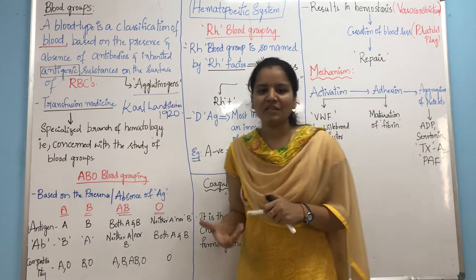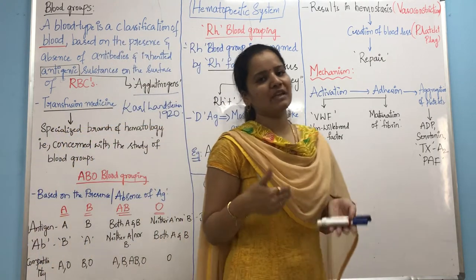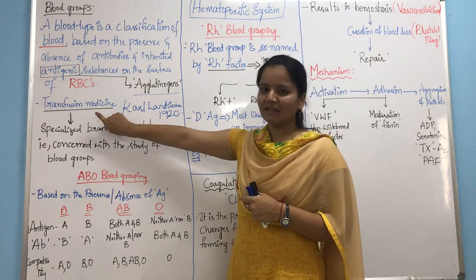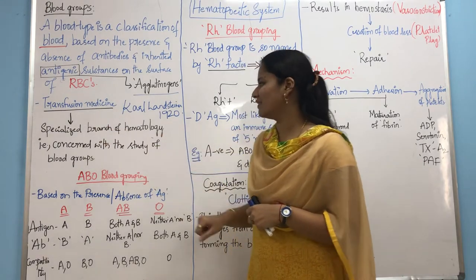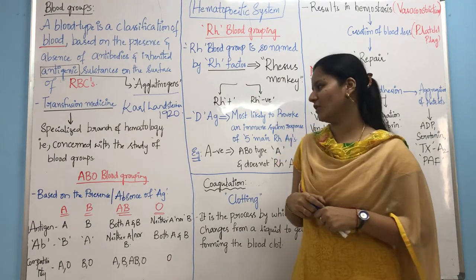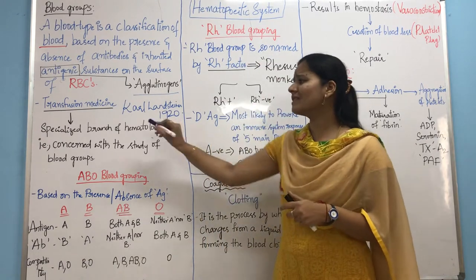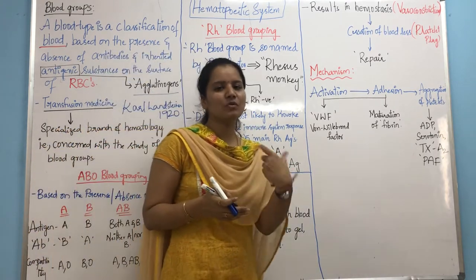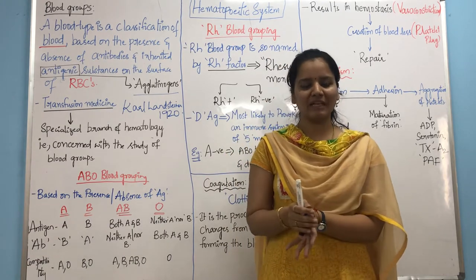There is a special branch of medicine which deals with the transfusion of blood based on blood groups, or based on the presence or absence of antigens or antibodies. This branch is called transfusion medicine. Transfusion medicine is a specialized branch of hematology concerned with the study of blood groups. It is very important because based on it, we can transfuse a particular type of blood group to a patient.